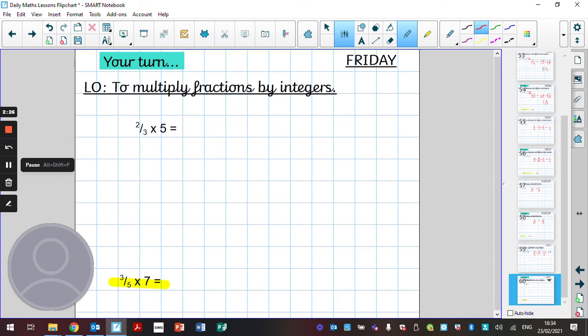Right children, well done for having a go. Now some of you may have done this for two thirds and rewritten five wholes as five over one. Now we can multiply the numerators together. Two multiplied by five is ten. Three multiplied by one is three.